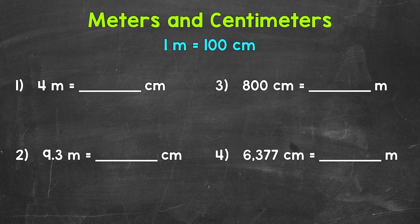We'll go from meters to centimeters and then centimeters to meters. One very important thing to keep in mind: one meter equals 100 centimeters. We need this information in order to convert. Let's jump into number 1.